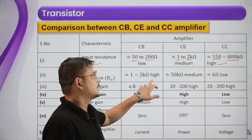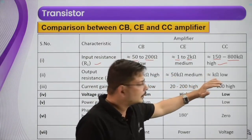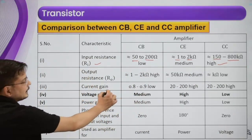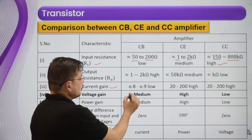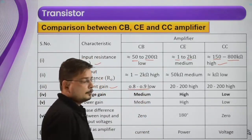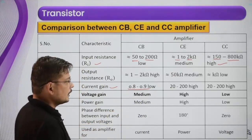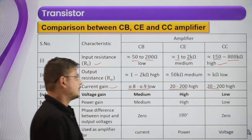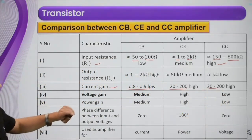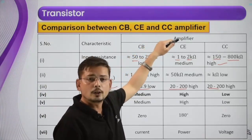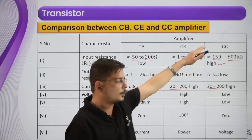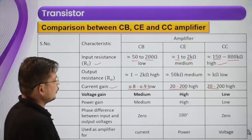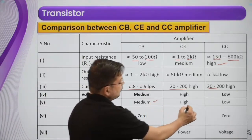For current gain: common base is low — 0.8 to 0.9. Common emitter is high — 20 to 200. Common collector is also high — 20 to 200. For voltage gain: common base is medium, common emitter is high, and common collector is low. Power gain: common base is medium, common emitter is high, and common collector is low.